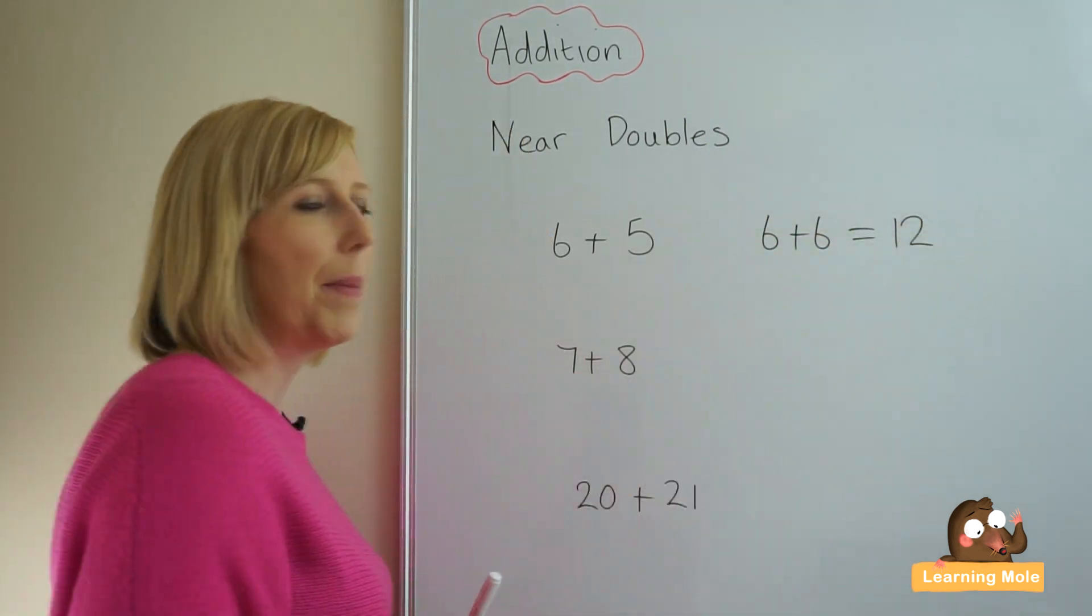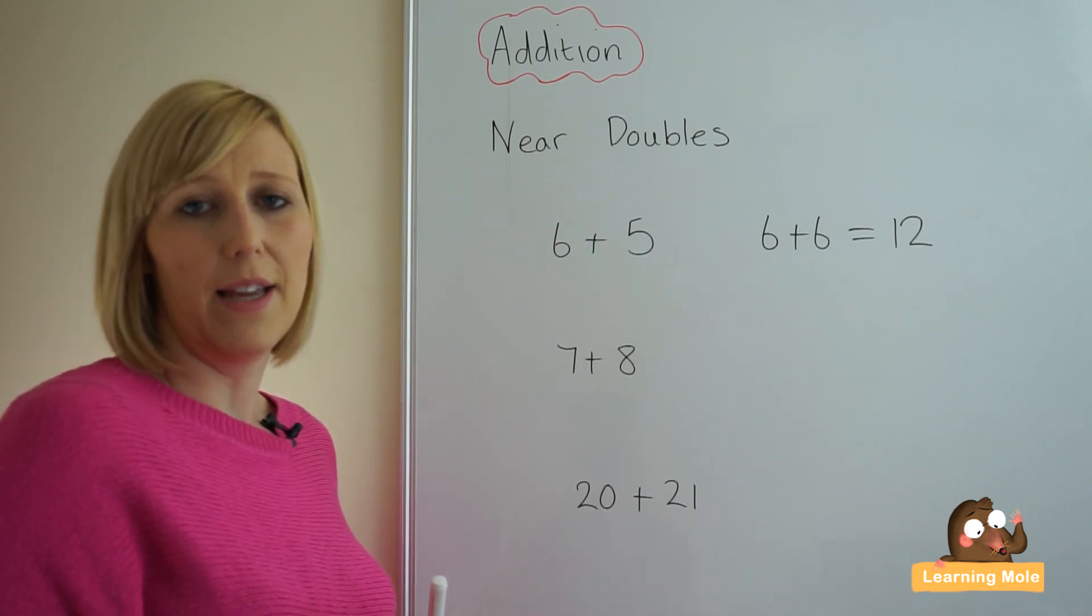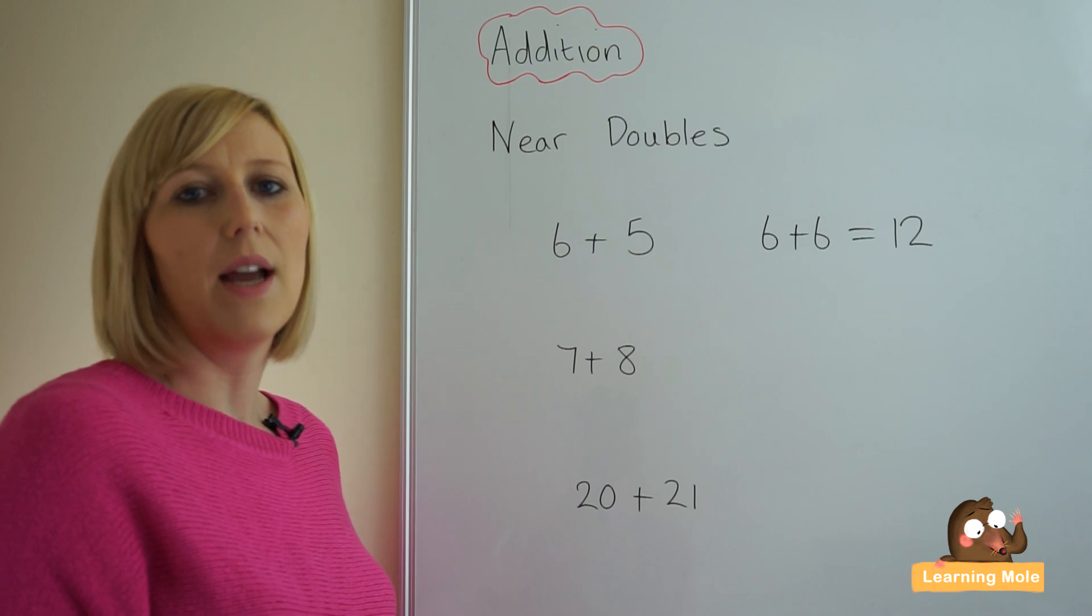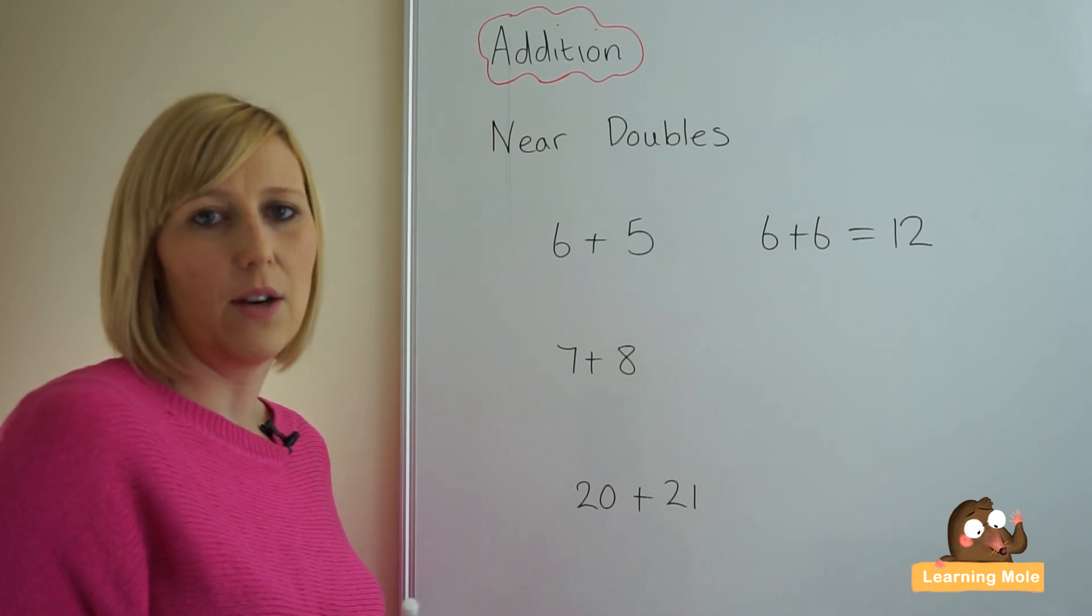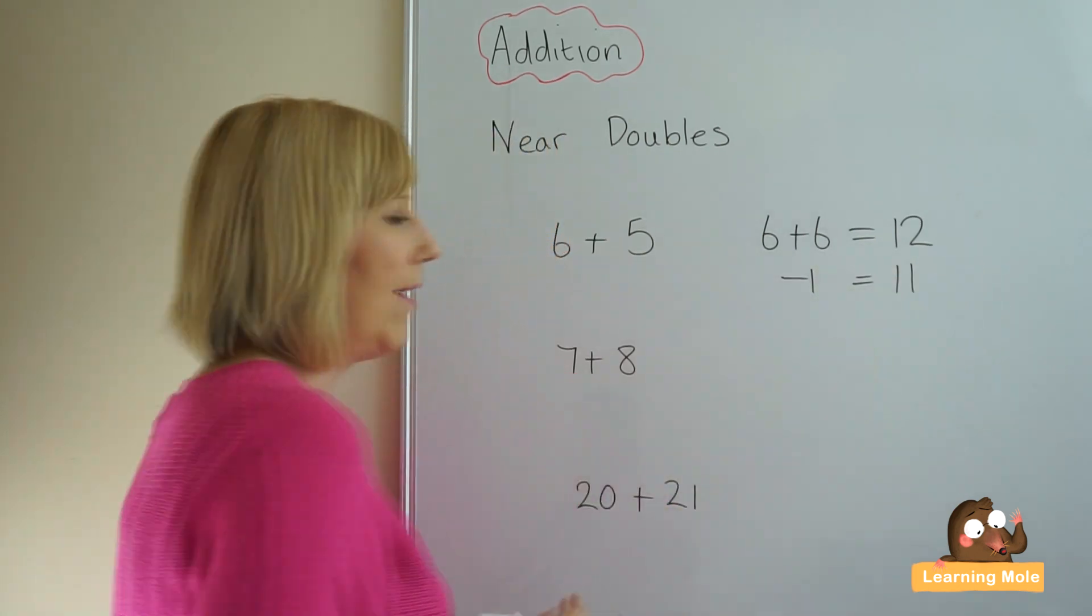But because we've turned the 5 into a 6, we need to adjust at the end and take that away. So we take that one away, which means we have 11.